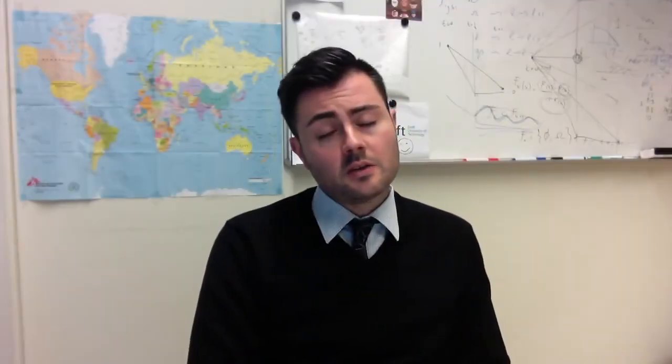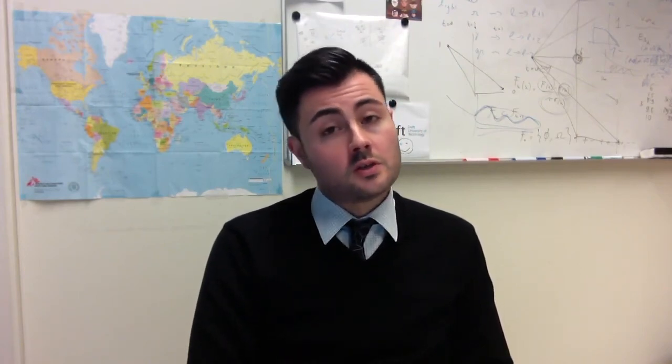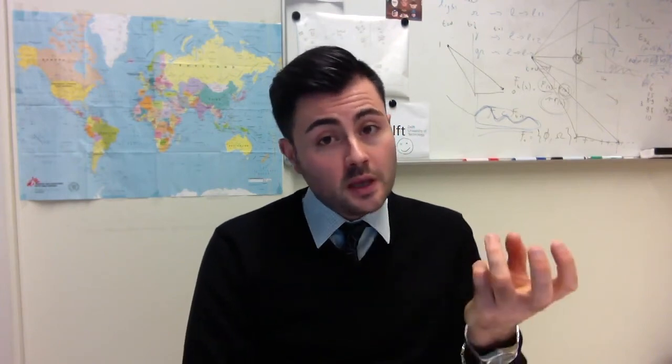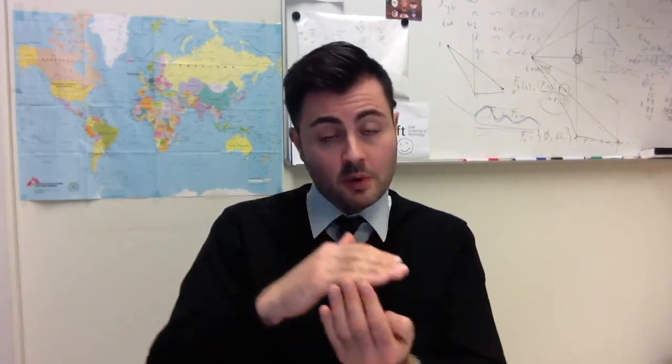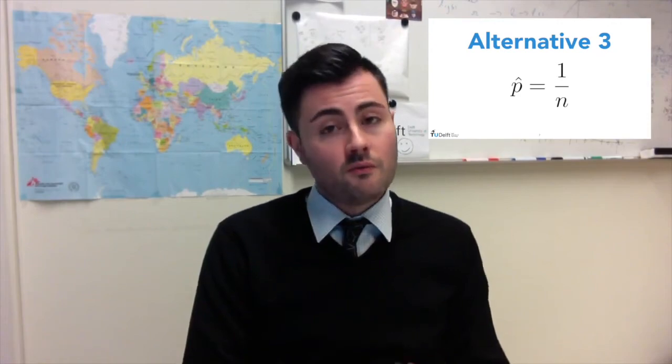Another estimator, called the upper bound estimator, is used by those scholars according to whom it is not logical that the p obtained in the case of zero defaults may be larger than what we can observe in the case of one default. In that case, what we can call the upper bound for our probability is simply 1 over n — very simple.